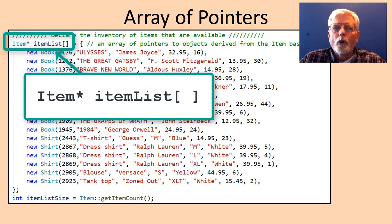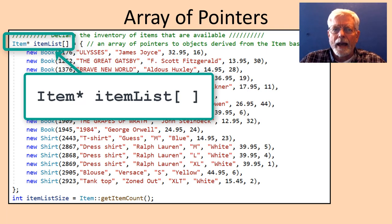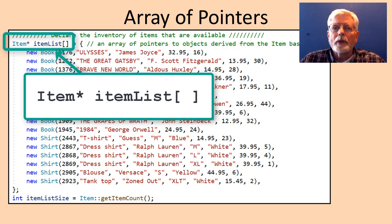A pointer holds a memory address. This works because every element in the item list array is the same data type — an item pointer. We need to use pointer operators when working with data or methods that belong to items in the item list array.